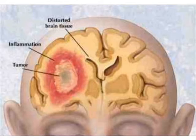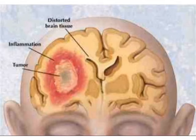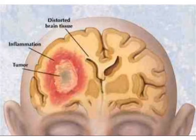Meningioma tumors occur in the meninges and are usually benign, but can cause complications based on their size and location. These types of tumors mostly occur in people between the ages of 40 and 70 and are more common in women than men.